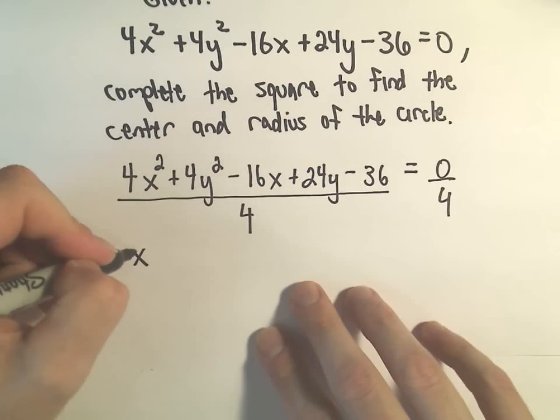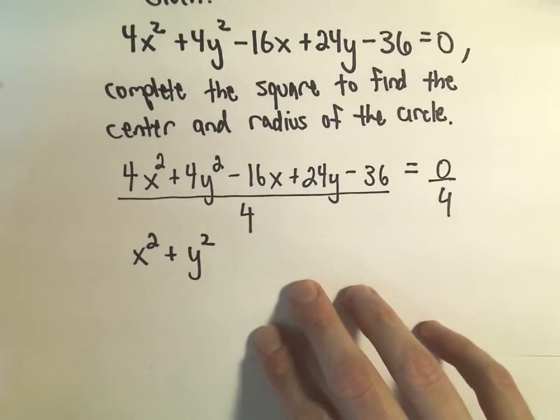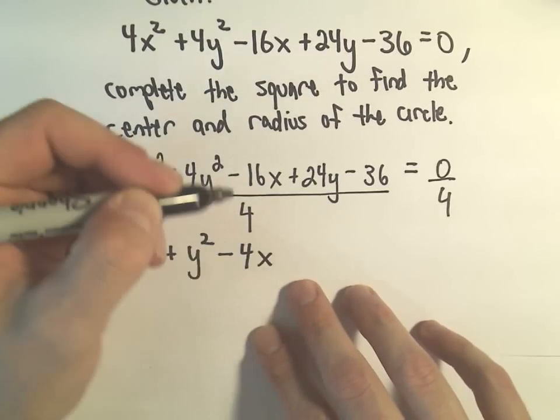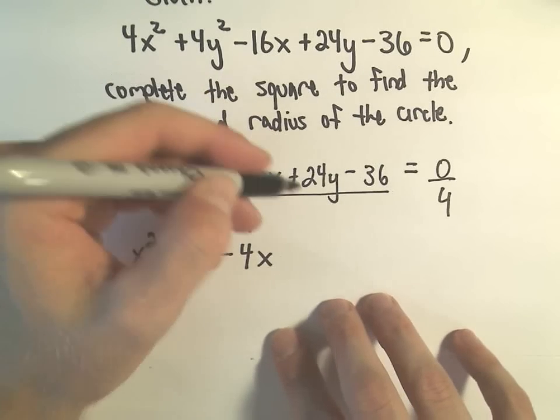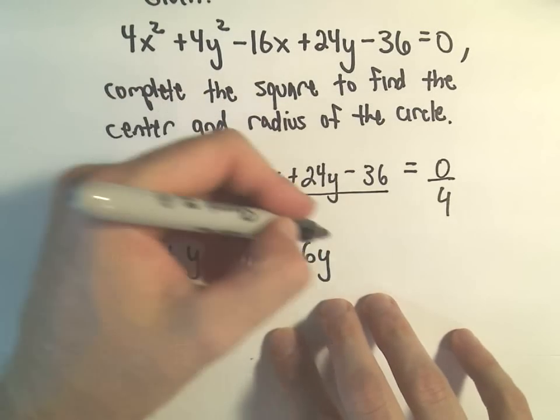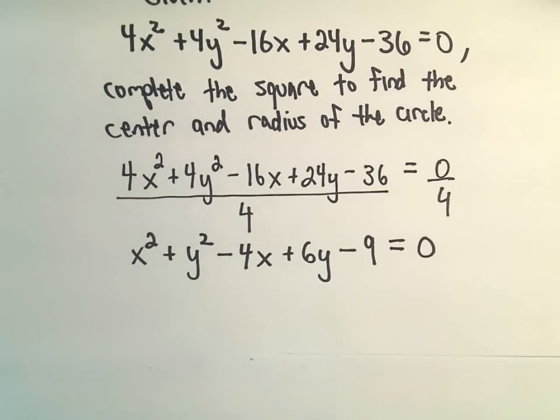4x squared over 4 is just x squared. 4y squared over 4 will be positive y squared. Negative 16x over 4 would be negative 4x. Positive 24 over 4 would be positive 6y. Negative 36 divided by 4 would be negative 9. And then 0 divided by 4 is 0.